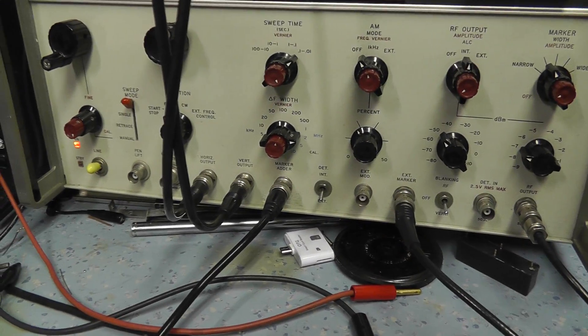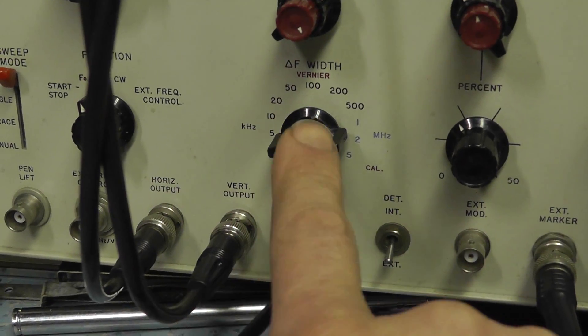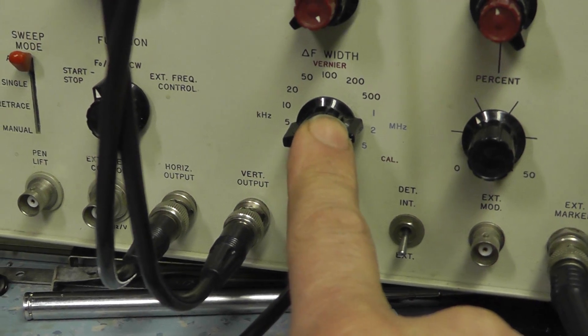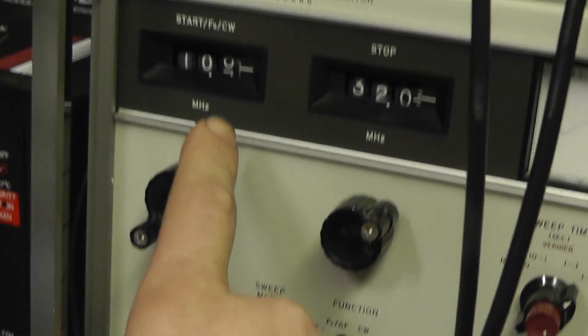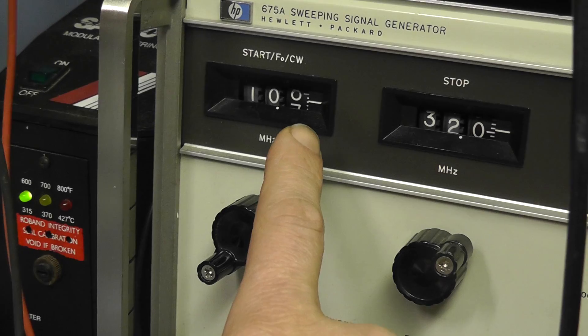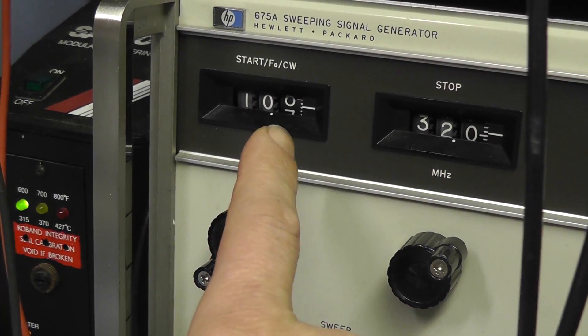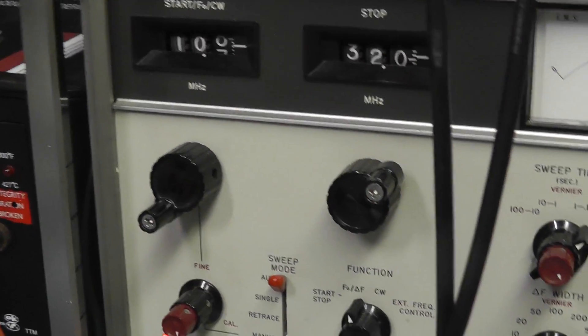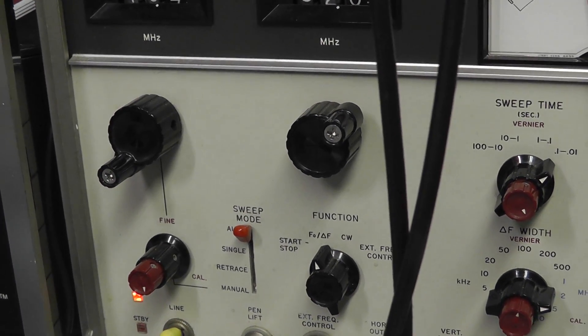So I'm sweeping a 1MHz bandwidth. This is our bandwidth selection switch here. This is our sweep width, 1MHz. Our center frequency of 10.7. You see it's not quite on 10.7, but that's because these dials aren't particularly accurate. I'll explain that in a minute and show you how you set the center frequency.